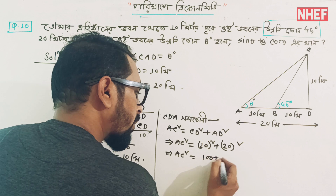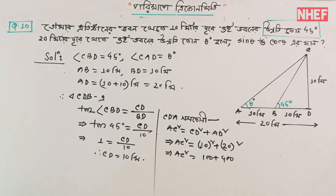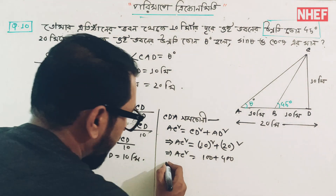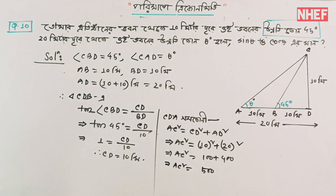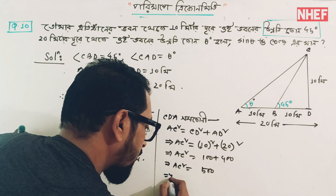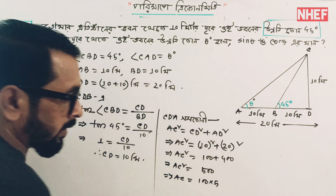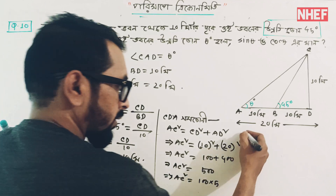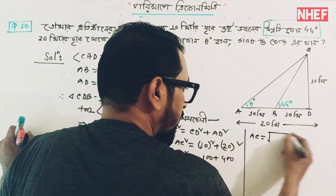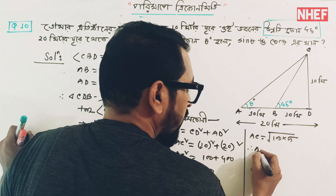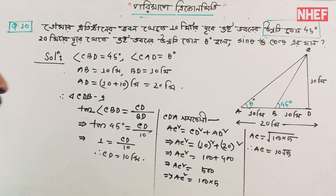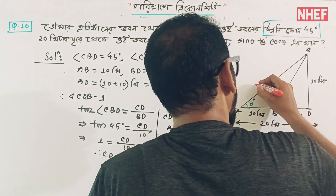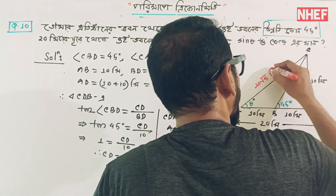SE squared is equal to x so plus charsho. SE squared is equal to 500. Derhko, SE squared is equal to 500. SE means a squared is equal to x so plus charsho, 4, 10, 5, 10.